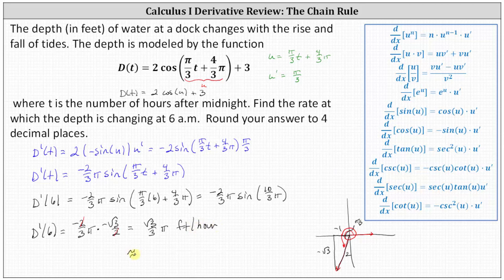As a decimal approximation, that is approximately 1.8138 feet per hour. Notice the rate is positive, which indicates the water is rising at a rate of approximately 1.8138 feet per hour. If the rate were negative, that would indicate the water is dropping, or the depth is decreasing.